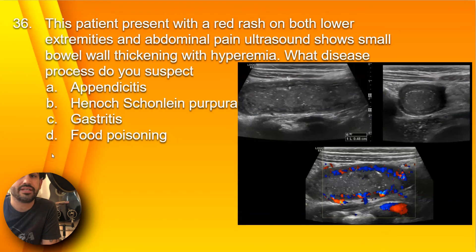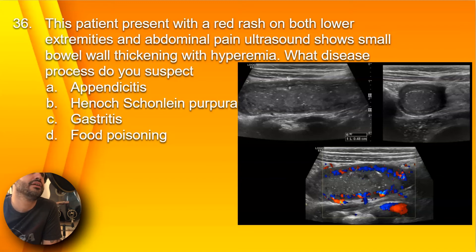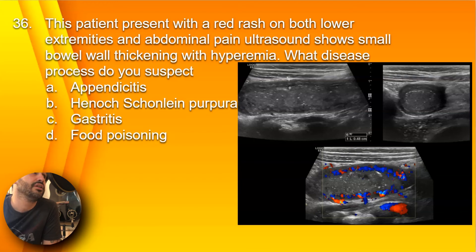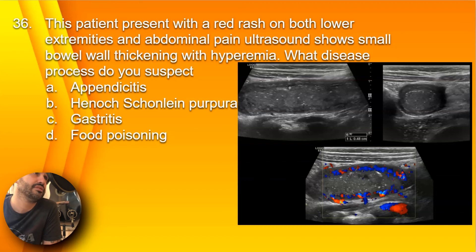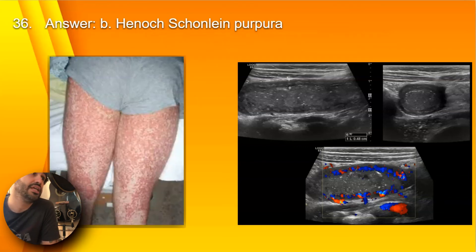Question 36: A patient presents with a red rash on both lower extremities and abdominal pain. Ultrasound shows small bowel wall thickening and hyperemia. What disease process do you suspect? A, appendicitis; B, Henoch-Schönlein purpura; C, gastritis; or D, food poisoning? Taking into account the bilateral lower extremity rashes and small bowel wall thickening with hyperemia, you would expect B, Henoch-Schönlein purpura.